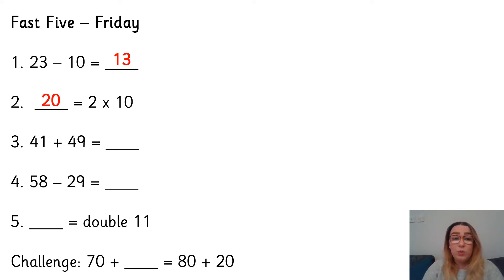Number three, 41 add 49. So I'm going to add together my 10s first. So I've got four 10s and four 10s which gives me eight 10s. Then I've got my 1s which is 1 on this side and then 9 on this side. 1 and 9 is 10. So I've got eight 10s and one 10, 90.